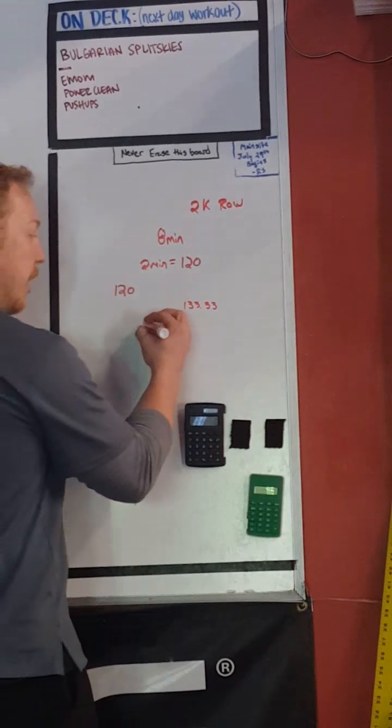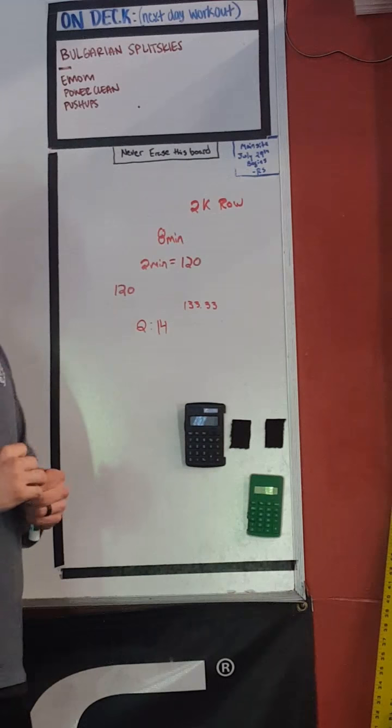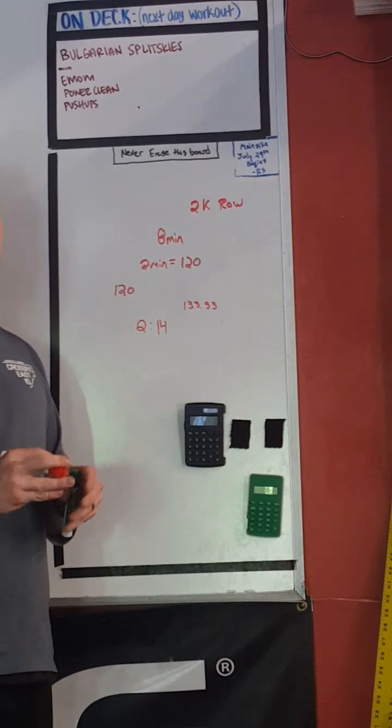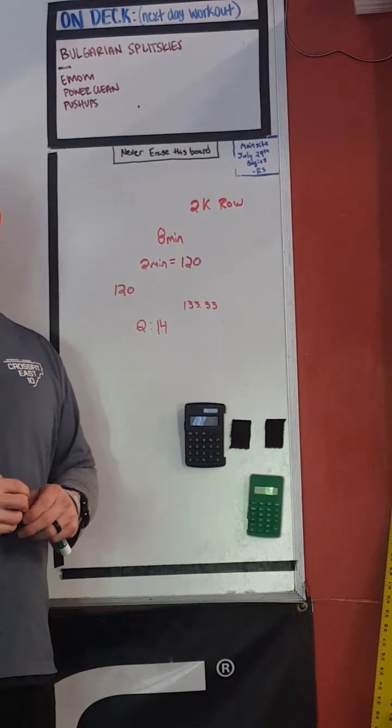So our pace would be two minutes and 14 seconds. For your 90 percent, you would hold the entire 2K row at a 2:14 per 500 meter pace.